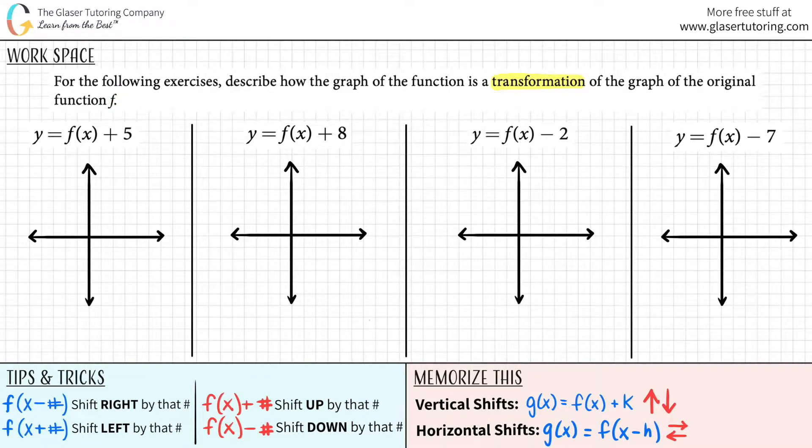In this case, I'm just going to say that my original function was y equals f of x, only because I see f of x for all of them. We have f of x here, over here, over here. So all we're doing is we're transforming off of this graph.